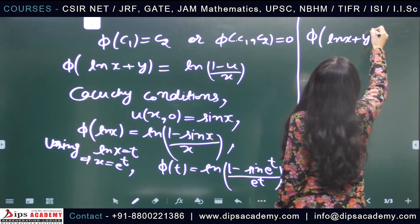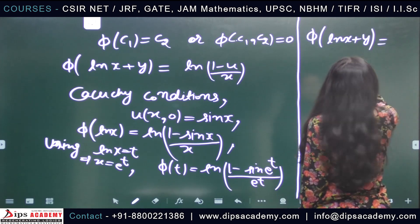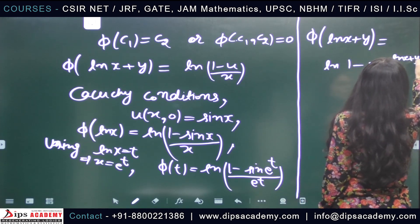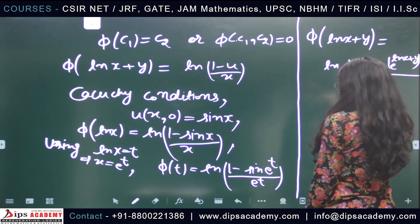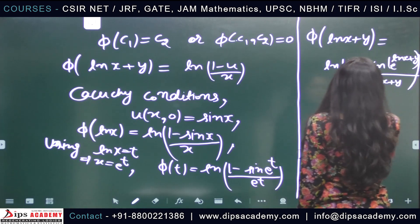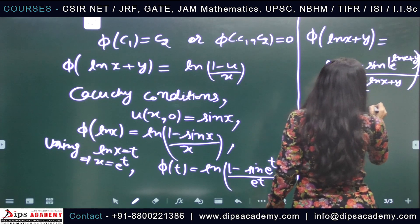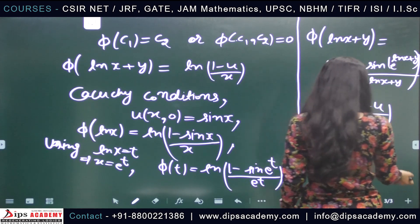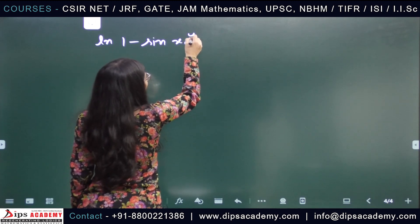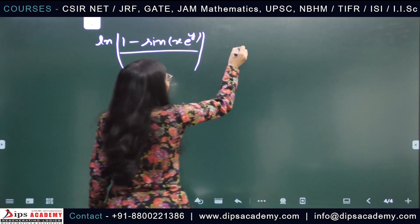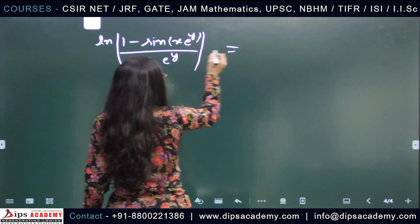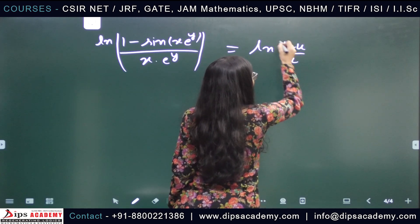Substituting back, φ(ln x + y) gives us ln((1 − sin(x·eʸ))/(x·eʸ)) equals ln((1 − u)/x). So we have ln(1 − sin(x·eʸ)/(x·eʸ)) equals ln x on the right-hand side after rearrangement.